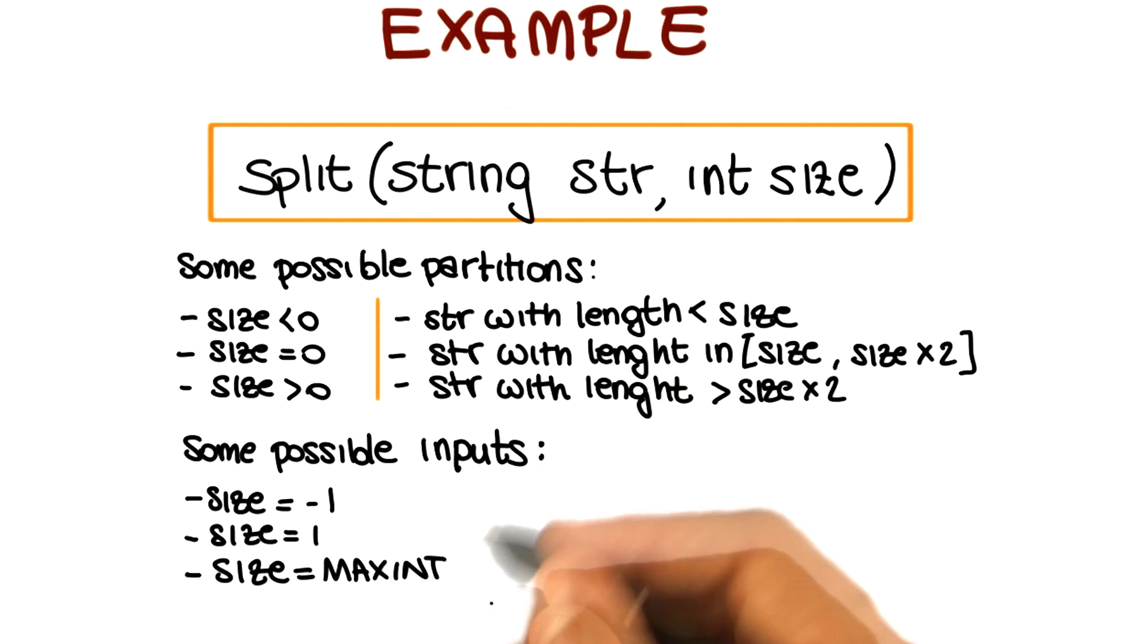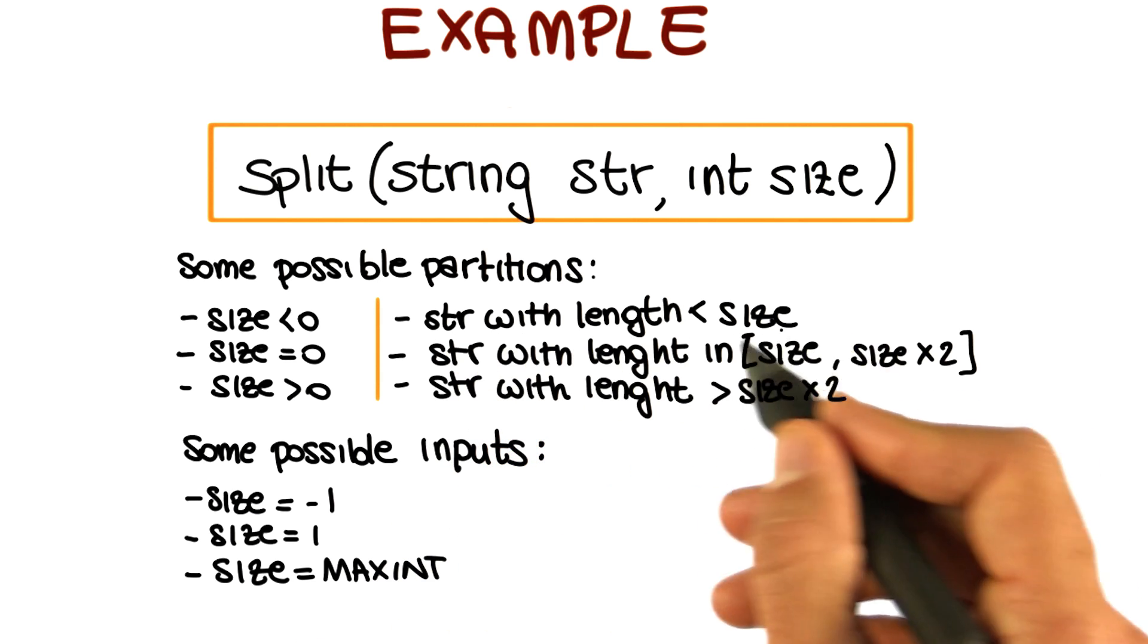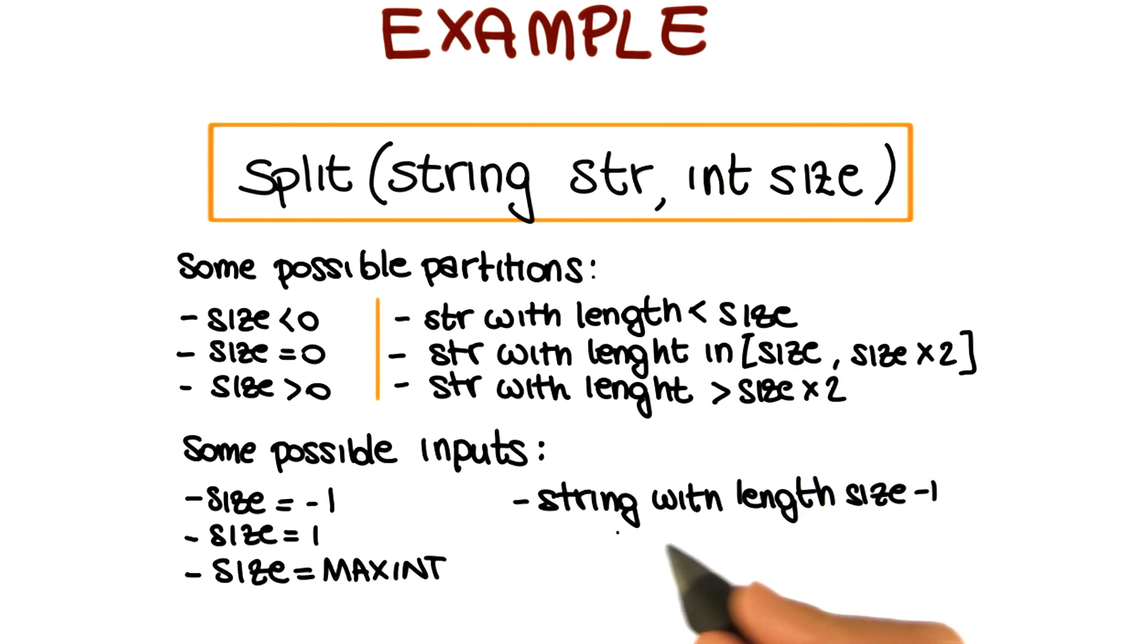Other possible inputs, one interesting example for the first one, string with length less than size will be a string with length size minus one. Again, this is the boundary value for this domain.